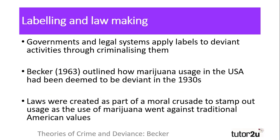Becker suggests that labelling also impacts on the creation of laws. When an activity is criminalised, this leads to a deviant label being applied to those that take part in this activity. Becker investigated this by looking at the process of criminalising marijuana usage in 1930s USA. With the recent repeal of prohibition laws, moral entrepreneurs looked to find an alternative substance to criminalise — one whose consumption went against traditional American values of sobriety, Christianity and hard work. As a consequence of their moral crusade, marijuana was criminalised and those who used it were labelled as deviant.